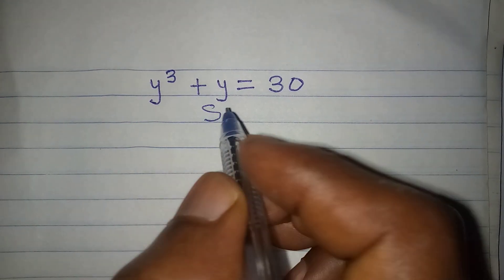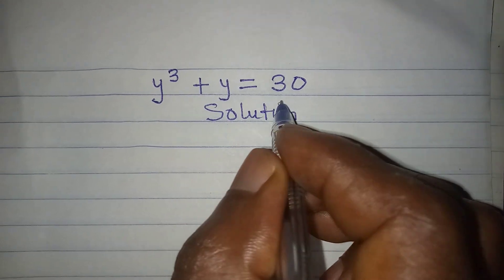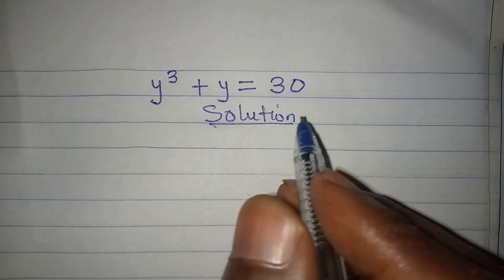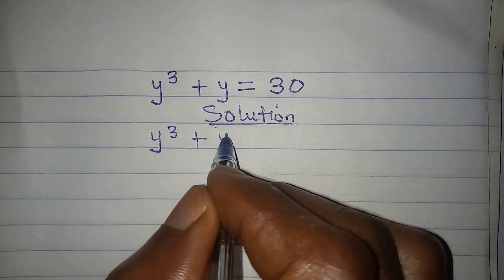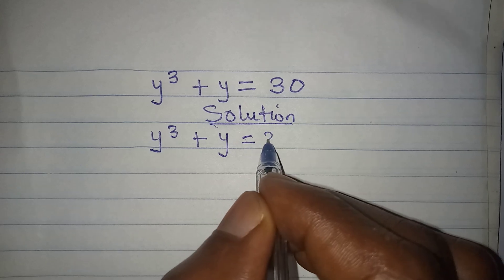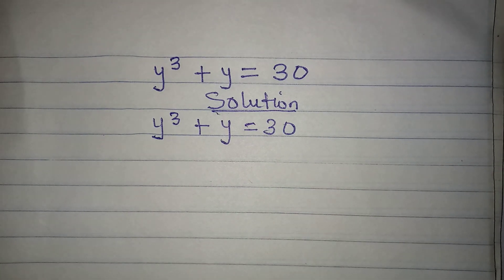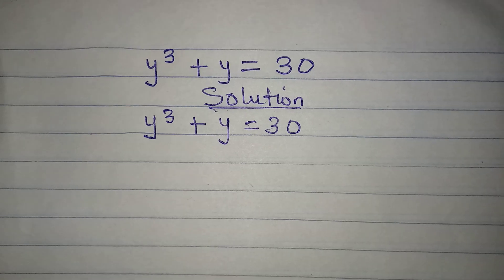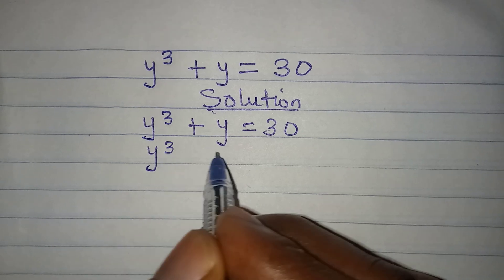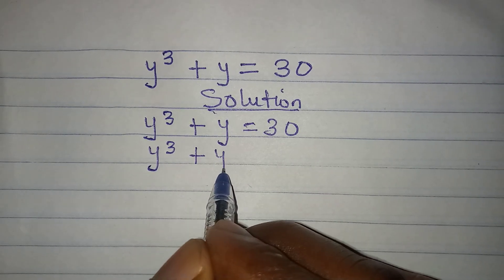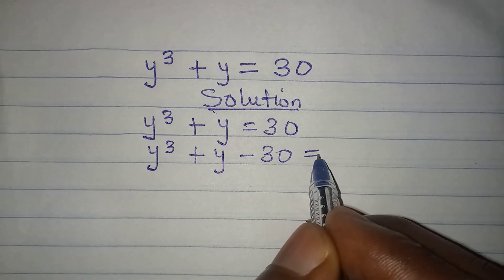Let's provide the solution to this problem very quickly. We have y to the power of 3 plus y equals 30. The first thing I want to do is bring 30 to the left, so I have y to the power of 3 plus y minus 30 equals zero.